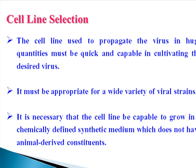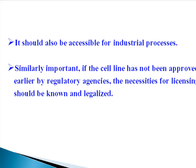Cell line selection: the cell line used to propagate the virus in huge quantities must be quick and capable in cultivating the desired virus. It must be appropriate for a wide variety of viral strains. It is necessary that the cell line be capable of growing in a chemically defined synthetic medium which does not have animal-derived constituents. It should also be accessible for industrial processes. Similarly important, if the cell line has not been approved earlier by regulatory agencies, the necessities for licensing should be known and legalized.